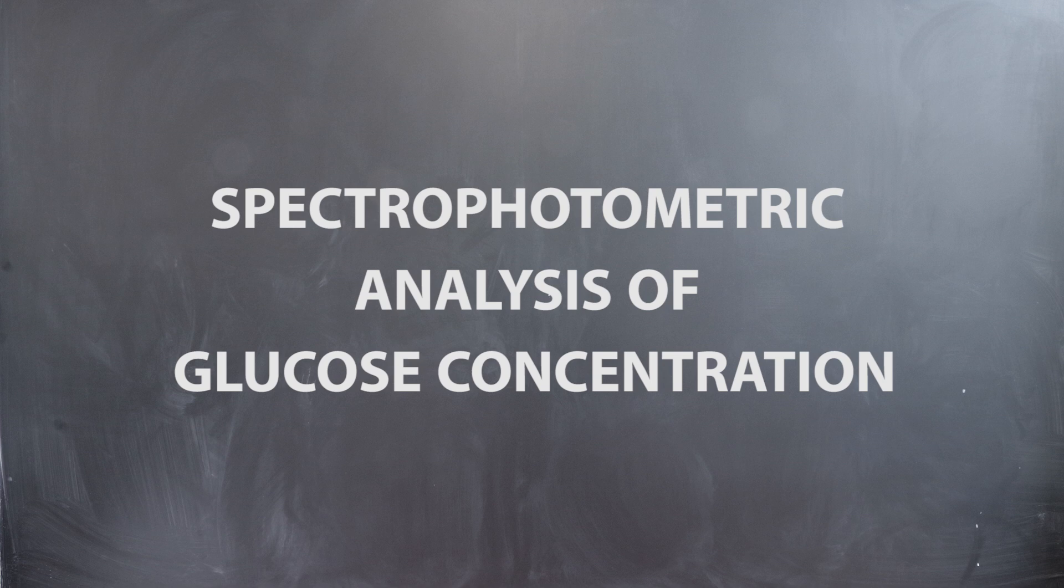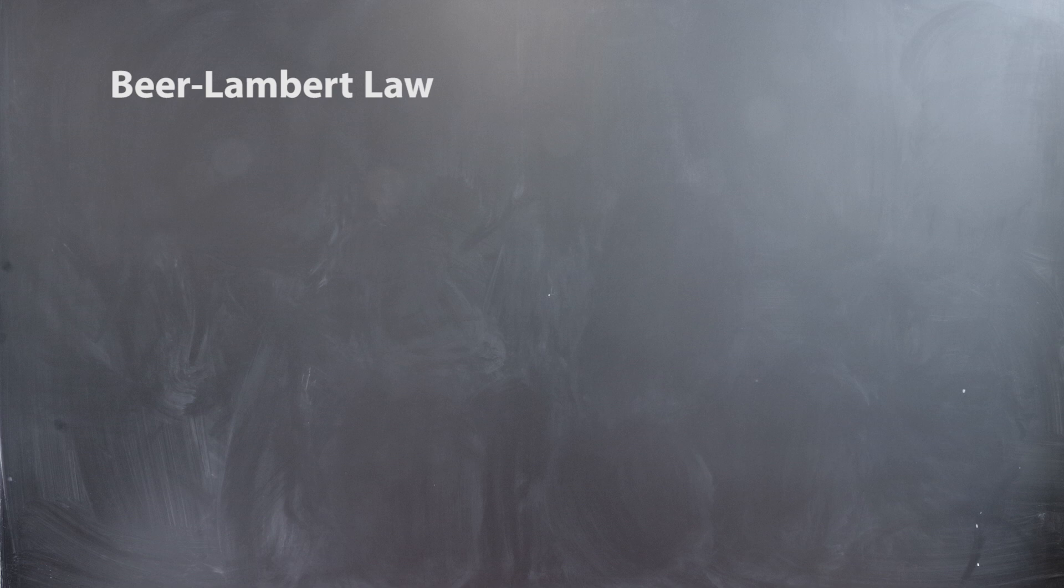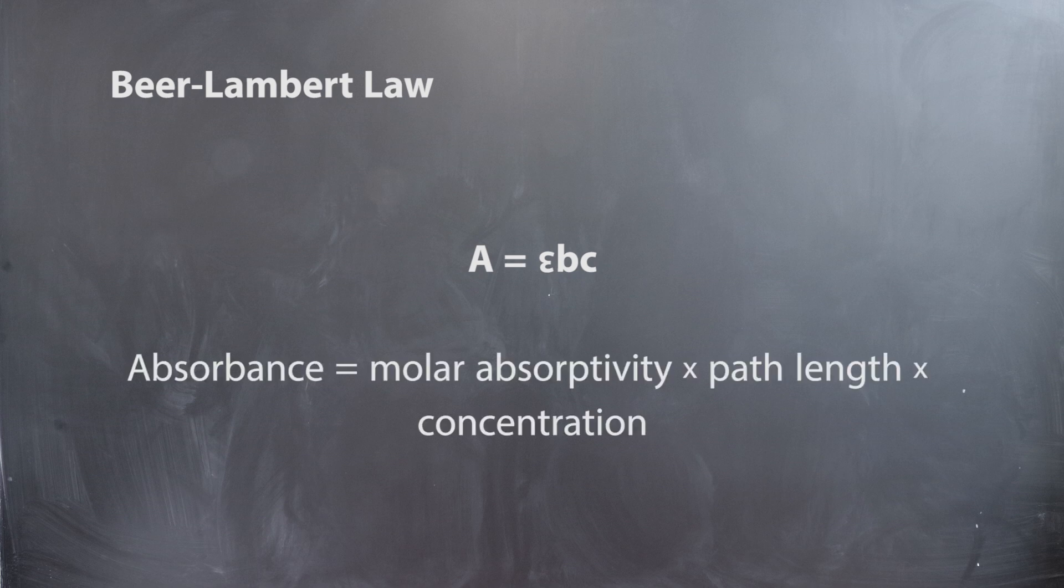Spectrophotometric analysis of glucose concentration. The Beer-Lambert law provides the mathematical correlation between absorbance and concentration. It is usually stated as absorbance equals molar absorptivity times path length times concentration.